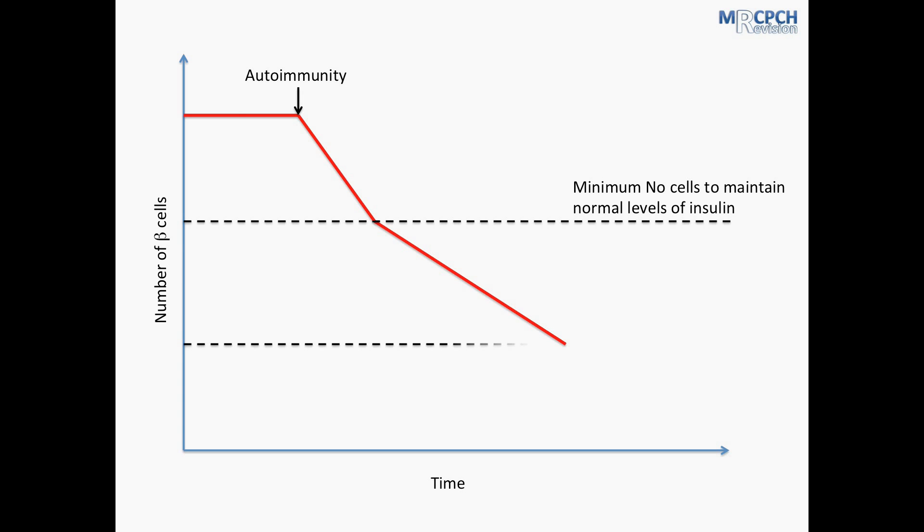So the number of cells falls further and proportionally we have less insulin. And so we come to a point where we have so few beta cells that we can no longer produce enough insulin to maintain our glucose homeostasis. And it's at this point we begin to suffer symptoms such as polyuria, polydipsia, polyphagia, weight loss, etc.